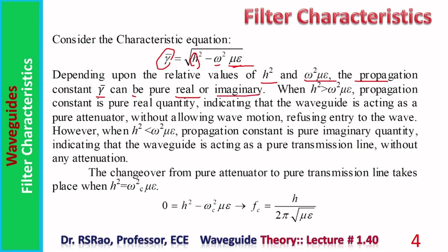When h² is greater than ω²με, the propagation constant is pure real, meaning the waveguide is acting as a pure attenuator — no wave motion or signal through it. However, when h² is less than ω²με, the propagation constant is pure imaginary, indicating the wave is traveling through the guide without attenuation — pure transmission.